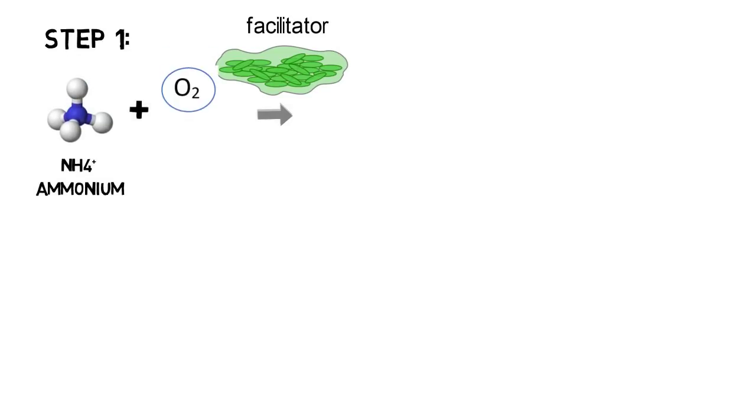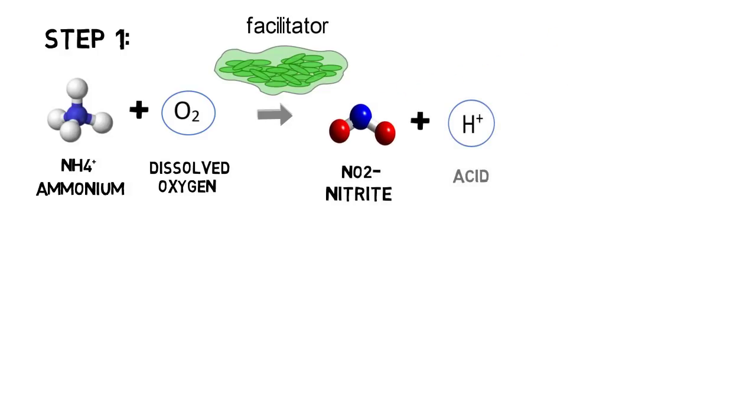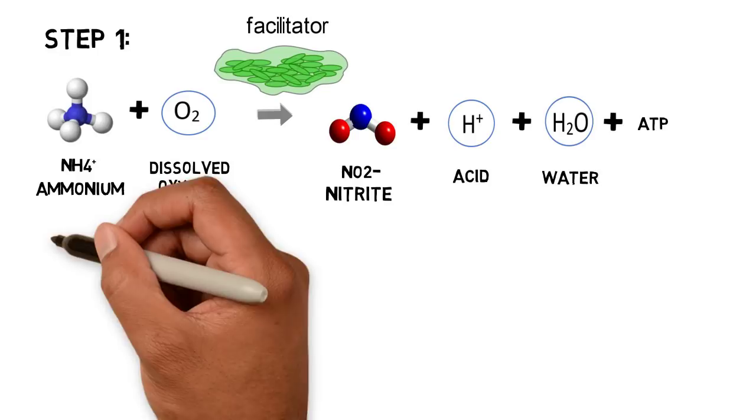In a first step, nitrifying bacteria facilitate the oxidization of ammonium using dissolved oxygen in the waste water. The result is nitrite, acid, water and ATP which is used by the bacteria for cell division.